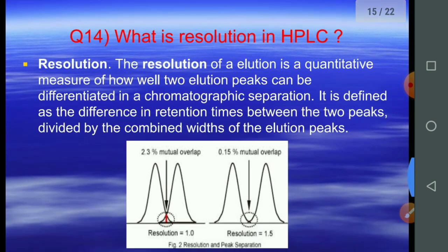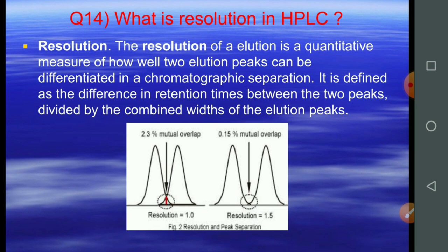Question number fourteen: what is resolution in HPLC? This is the most important system suitability parameter of HPLC. Resolution is the quantitative measure of how well two elution peaks can be differentiated in a chromatographic separation. It is defined as the difference between the two peaks divided by the combined width of the elution peaks.